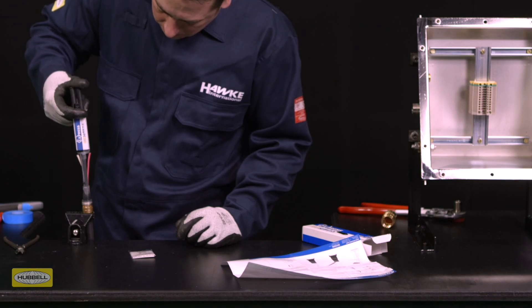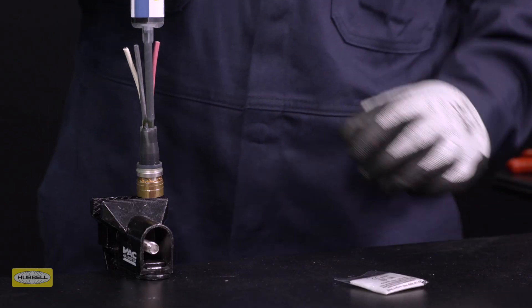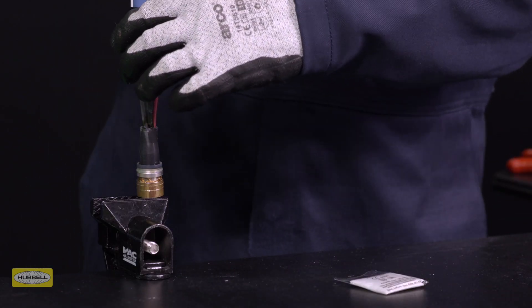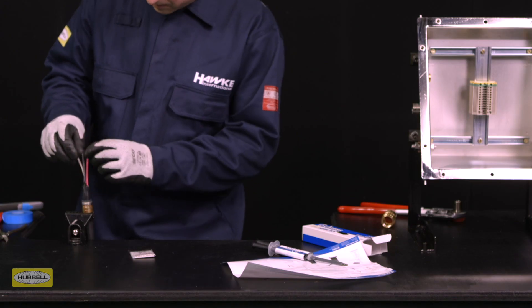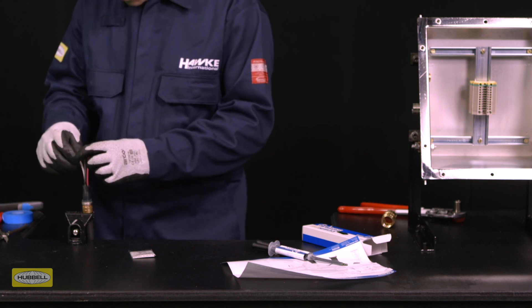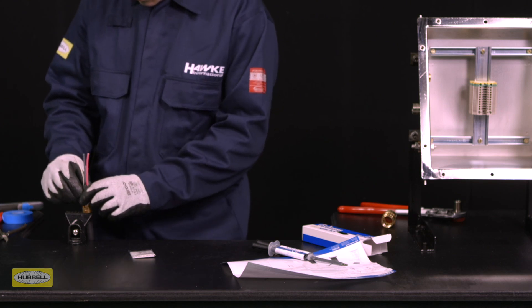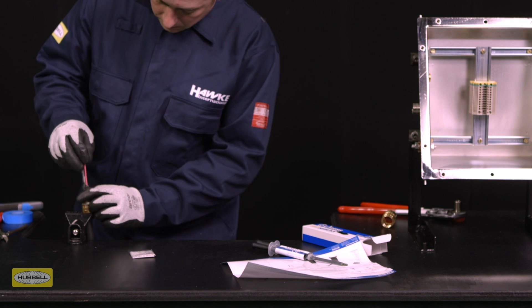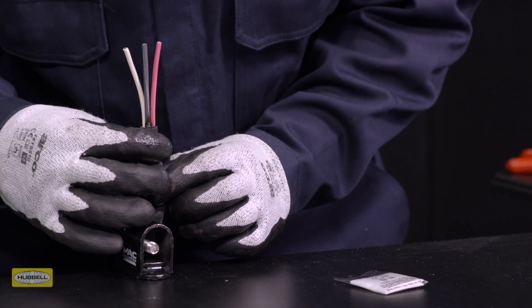Check that the resin is properly filled without any voids. Manipulate the cable cores to ensure the resin has filled any voids between them. If air pockets are present, coax them out from the resin by manipulating the silicon pot.